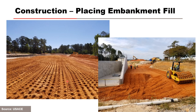Fill compaction was performed with a sheepsfoot or tamping-foot roller. Next to the spillway structure, the walls were slightly battered for more effective compaction. Within 3 to 4 feet of the structure, walk-behind type compactors were used. The shell and core material were placed at or slightly above optimum moisture for a good bond against the wall, with thin lifts of 4-inch loose lifts used adjacent to the structure.